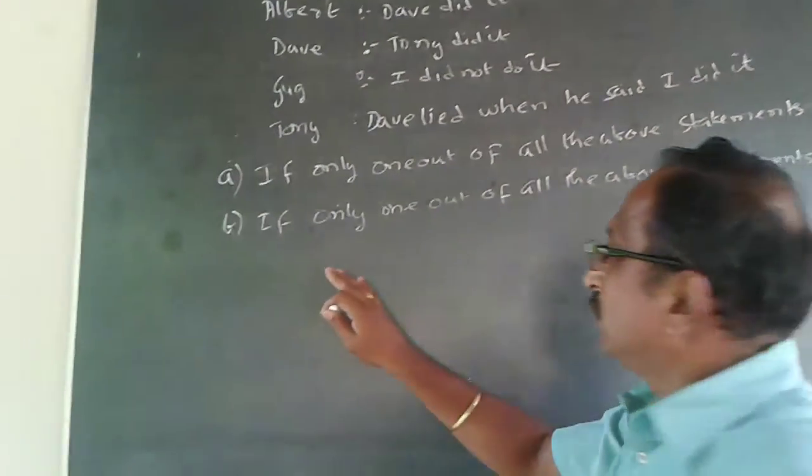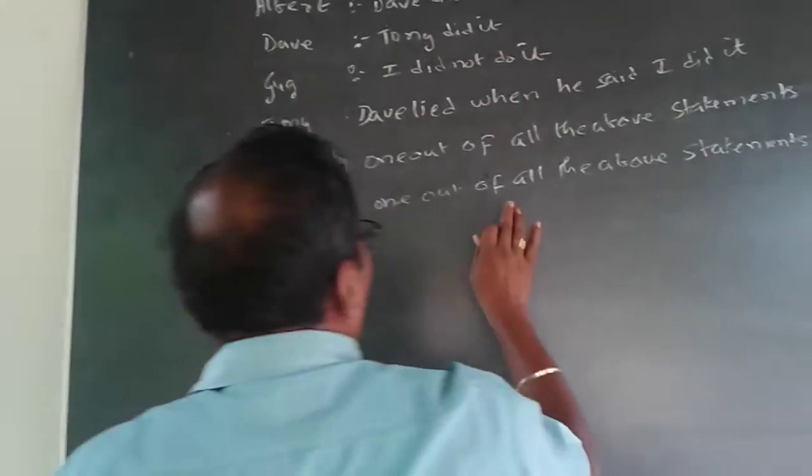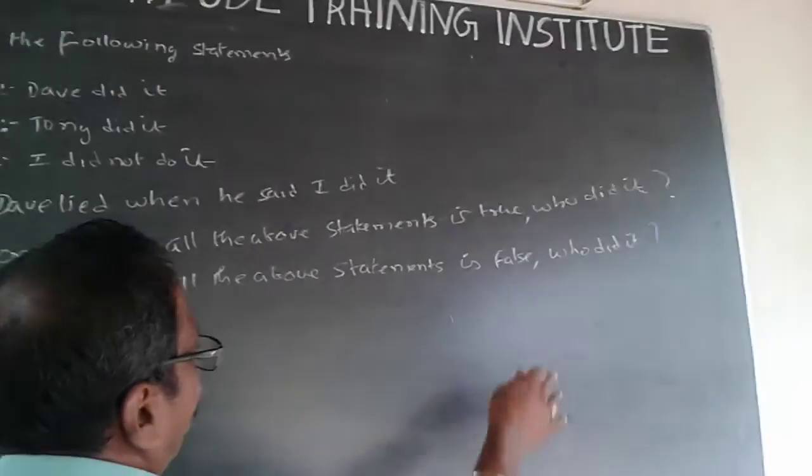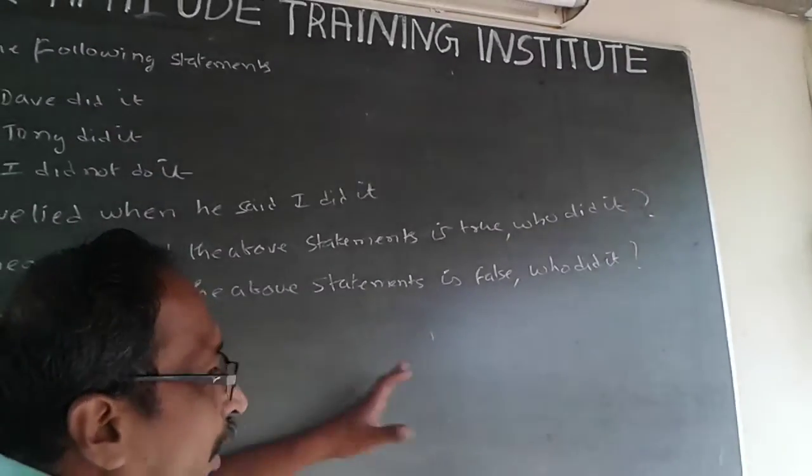Similarly, condition D is: if only one out of all the above statements is false, who did it?